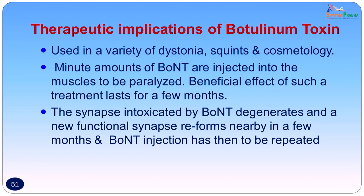Botulinum toxin is not all bad — there are various therapeutic implications. It has been used in a variety of muscle dystonias, in the treatment of strabismus (squints), and in cosmetology. Minute amounts of botulinum toxin are injected into the muscle to be paralyzed. The beneficial effect lasts only for a few months. The synapse intoxicated with botulinum toxin degenerates and a new functional synapse reforms in a few months, so botulinum toxin has to be re-injected and the process repeated.